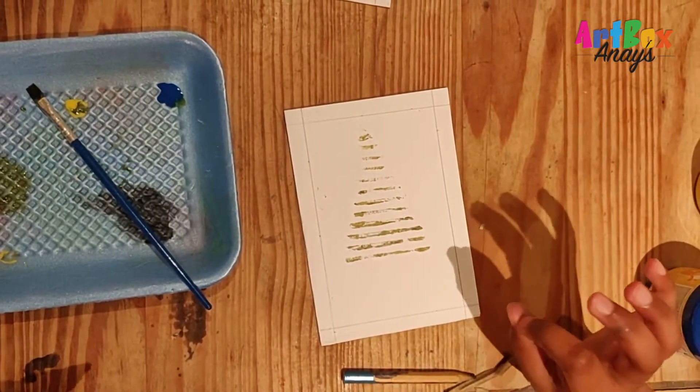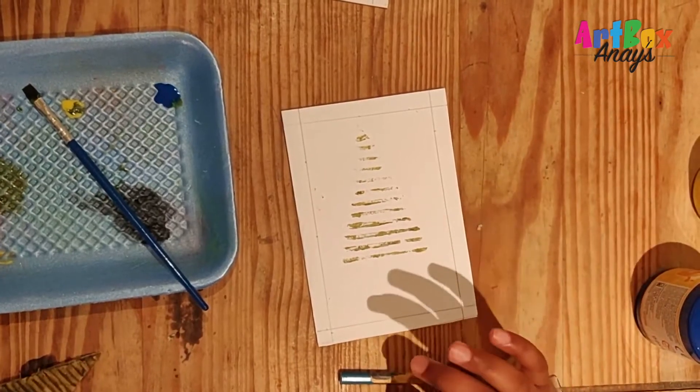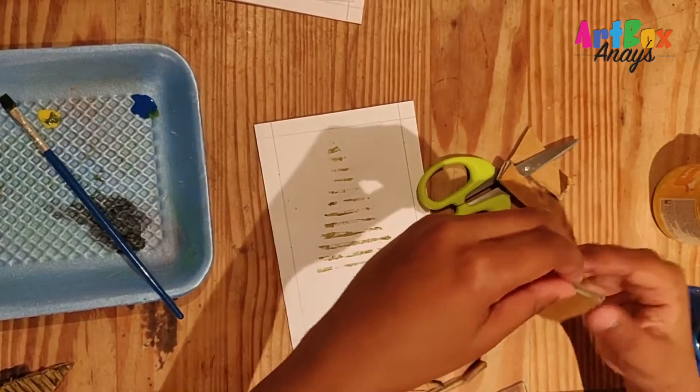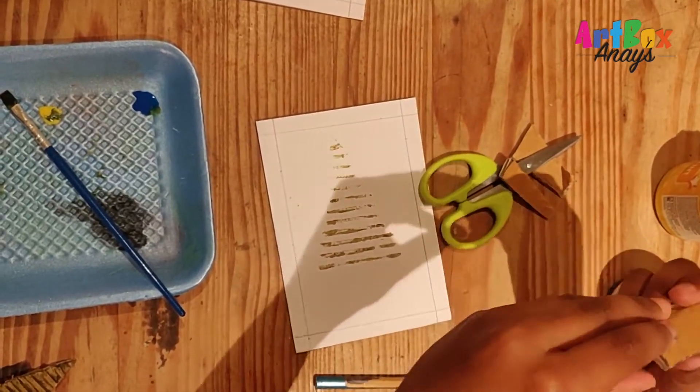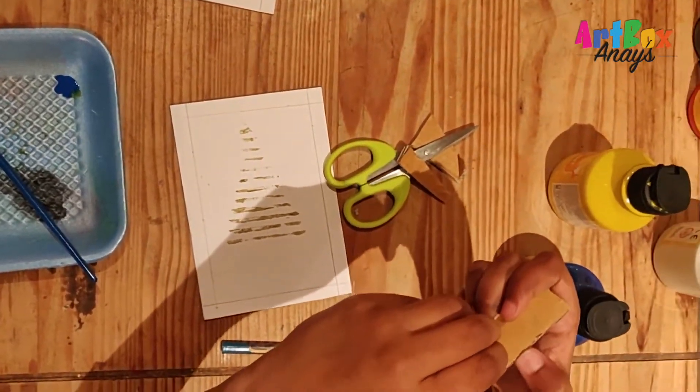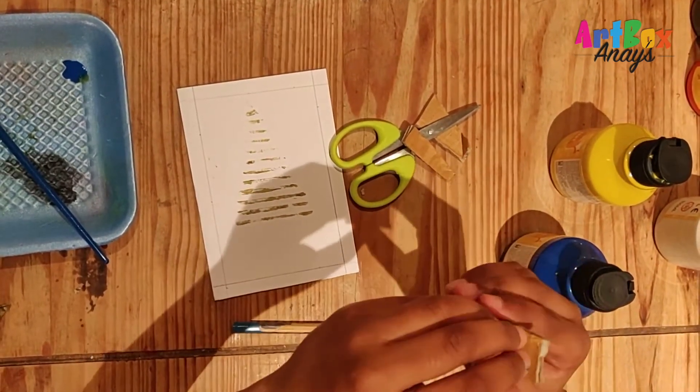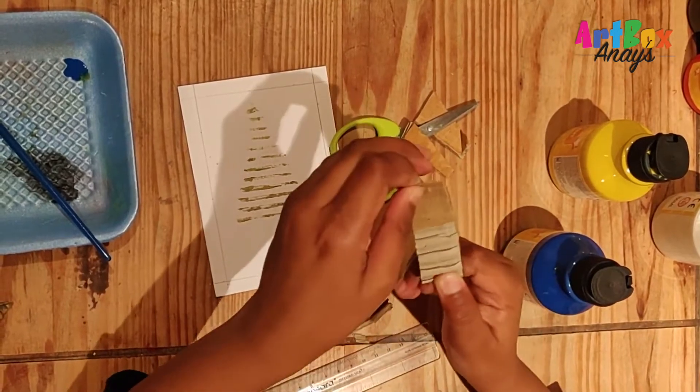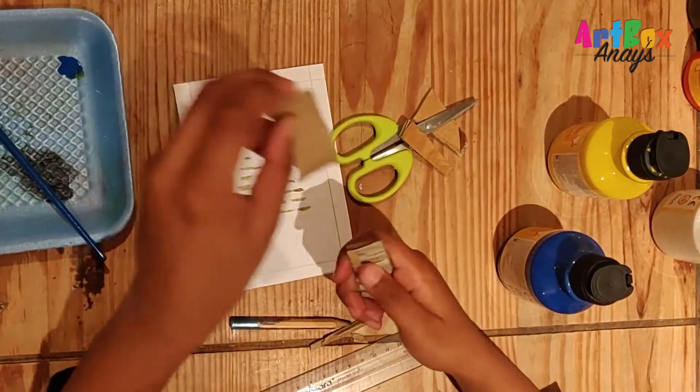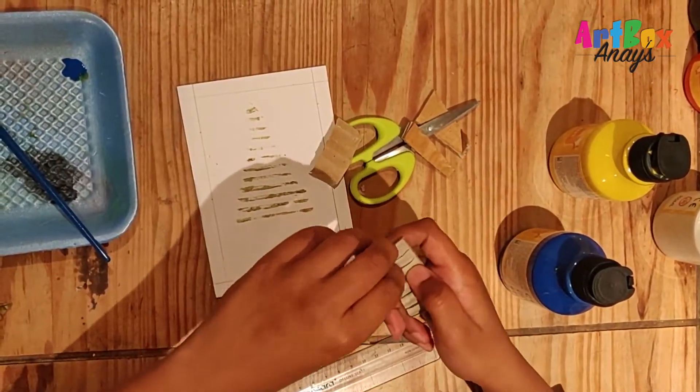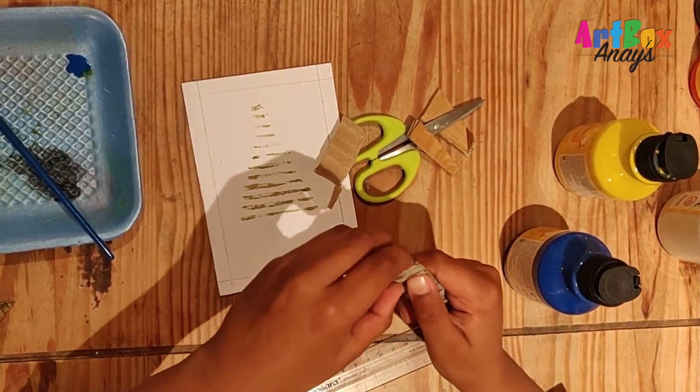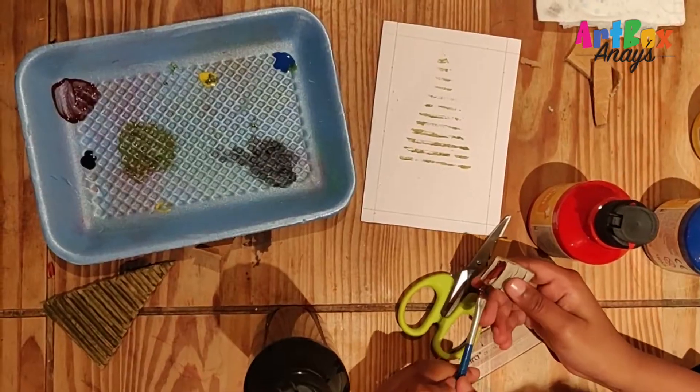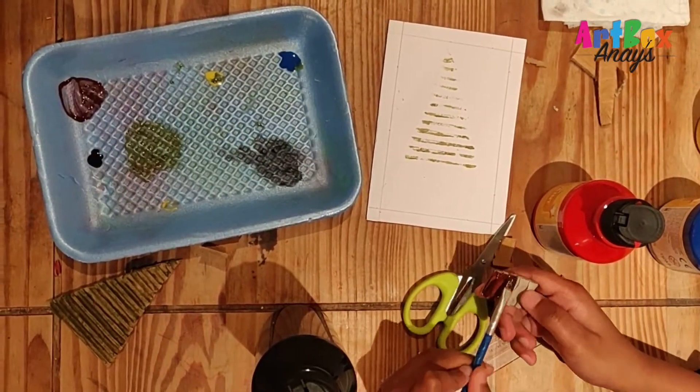Now the next part we will do is take our cardboard piece that was remaining, cut it in a rectangle, and then do the same thing that I told you. Rip it off and now make our brown color, apply this brown color onto the rectangle piece.